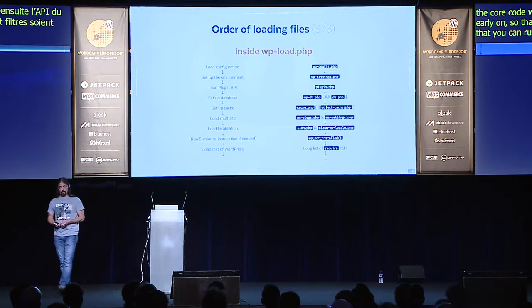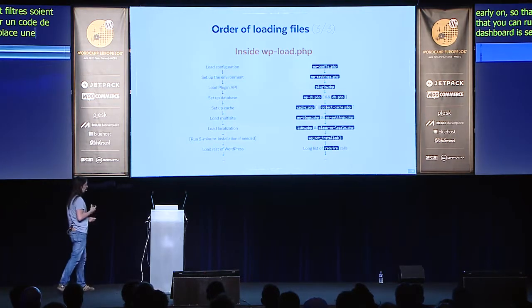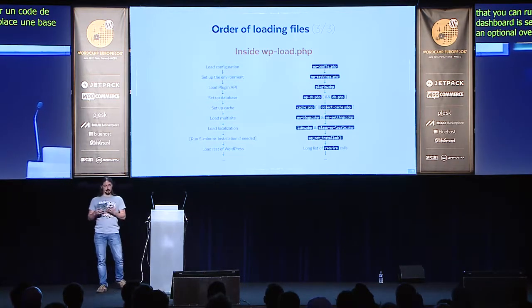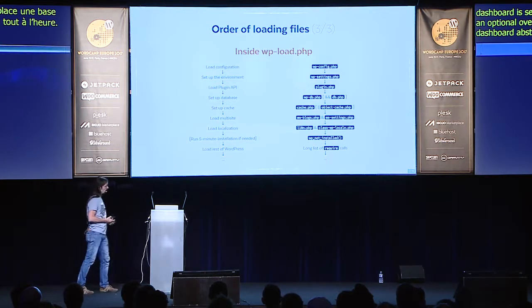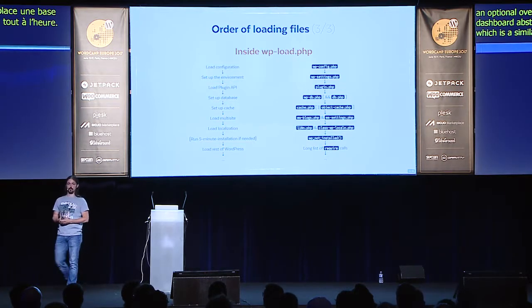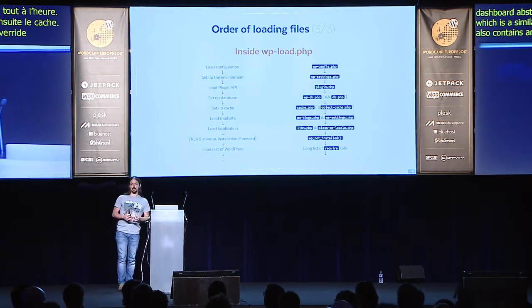Then the database is set up — this is loaded through the wp-db file and it might contain an optional override in the db.php file, which I'll come to later. This sets up the database abstraction layer that WordPress offers. Then we have the cache, which is a similar abstraction layer for all the caching parts of WordPress, and it also contains an optional override. After these are set up, it continues to try to load multi-site. You can set constants in your configuration file to tell it that you're currently running on a multi-site, and if WordPress notices this it will try to examine the URL you've typed and deduce the network and the site that the code should run from.